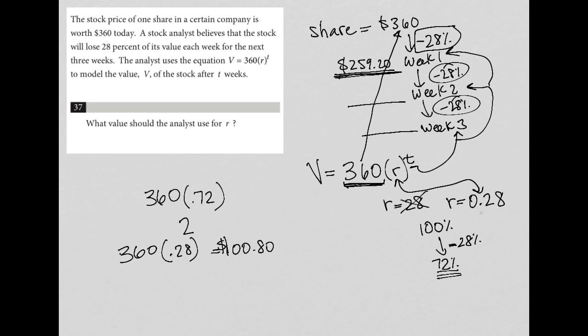A 28% decrease is really 72% of what you have. So given that understanding, what do I really want to multiply the 360 by every single week? It's going to be the 72%, right? So R should equal 0.72. That should be the correct answer for this one.